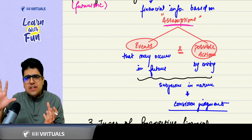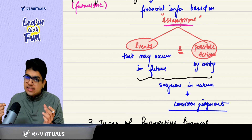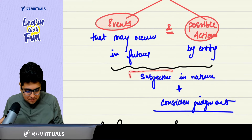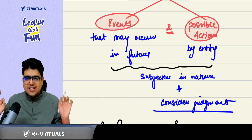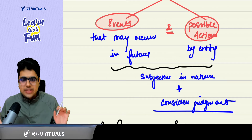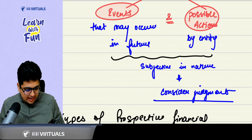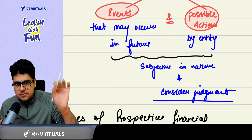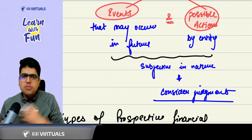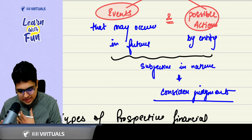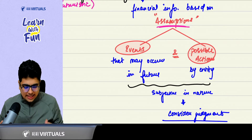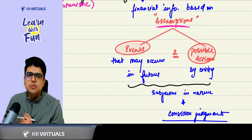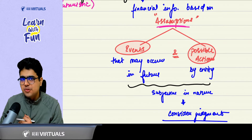Everyone can have a different view on this. So this thing is subjective in nature, and you as a practitioner need to consider the judgment of the management. Can you give us an example of what are the types of prospective financial information?